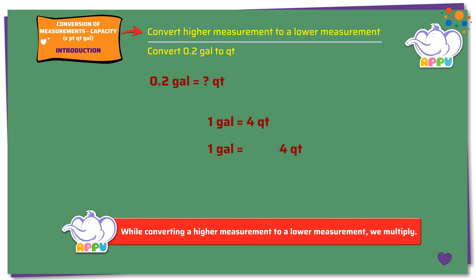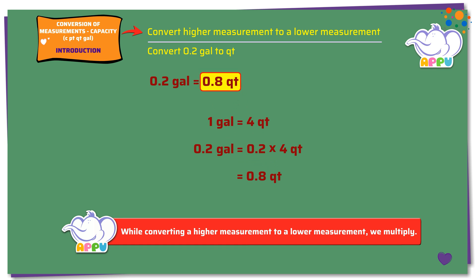Multiplying both sides by 0.2, we get 0.2 times 1 gallon equals 0.2 times 4 quarts. 0.2 times 4 quarts equals 0.8 quarts. So, 0.2 gallons equals 0.8 quarts.